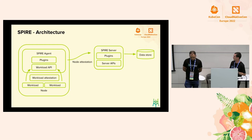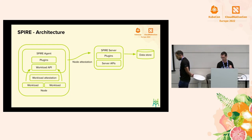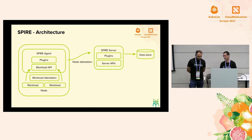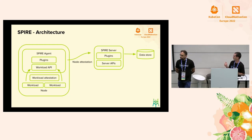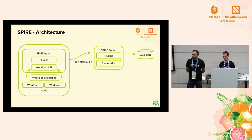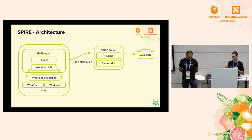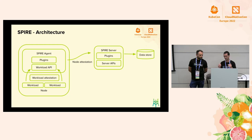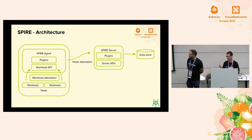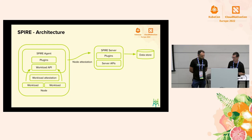The server obviously needs to store some data. What is important for this presentation is that in the data store are stored what we call registration entries. Registration entries describe the workloads and have attributes called selectors that describe the workloads. That allows SPIRE to issue identity based on the discovered selectors, and that information is stored in the data store.